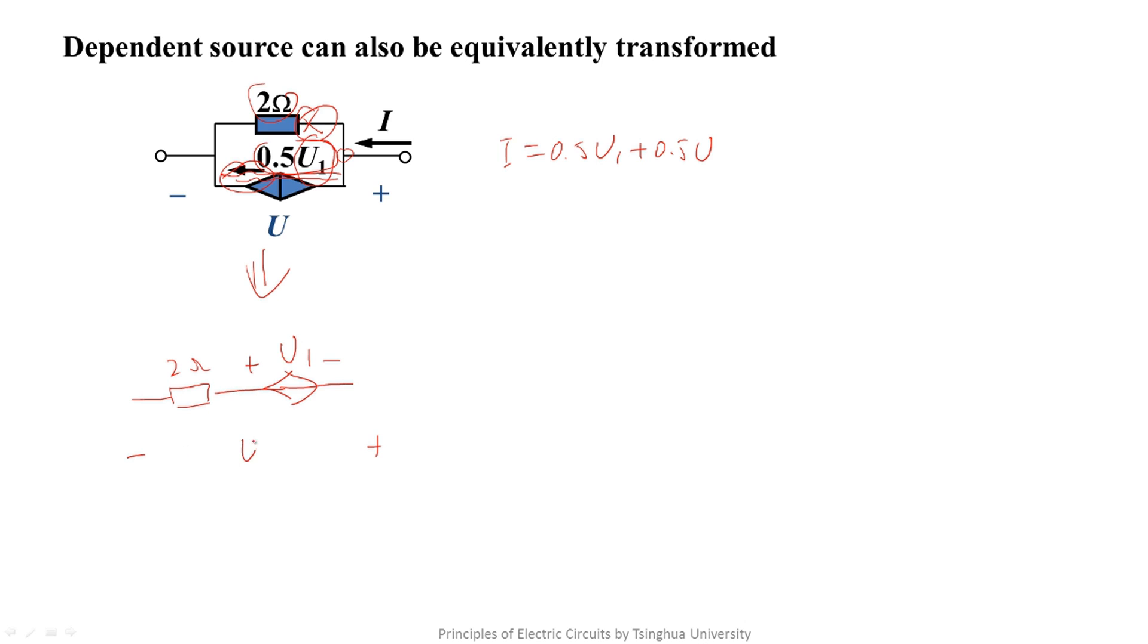We mark the same pulse, voltage and current direction. So, for this circuit, only one voltage equation can be written. In other words, U is equal to the negative U1 plus 2I.